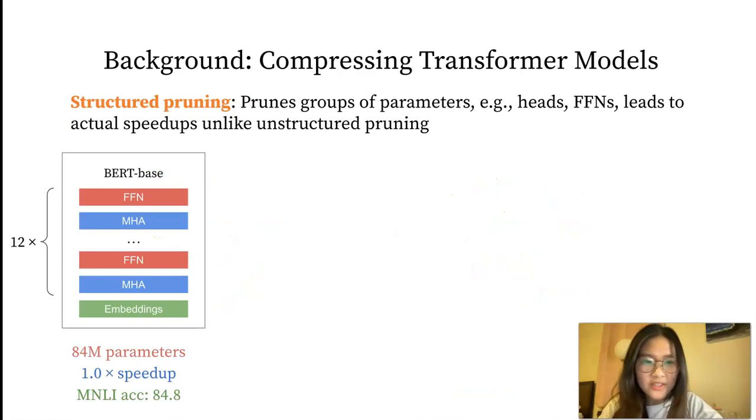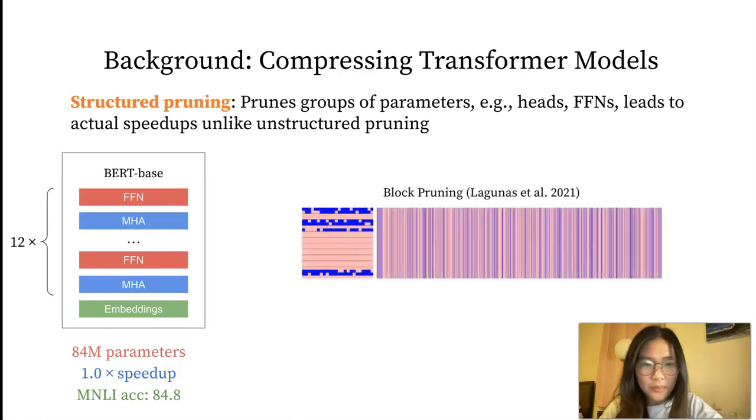Structured pruning instead searches for an accurate subnetwork in a large pre-trained model by pruning groups of parameters, such as heads and full FFN layers, and therefore it can lead to actual inference speedup without special optimization. The state-of-the-art pruning approach block pruning prunes blocks in multi-headed matrices and intermediate dimensions in feed-forward networks. It produces a model of a size of 25 million parameters and achieves 2.7 times speedup and 83.7 accuracy.